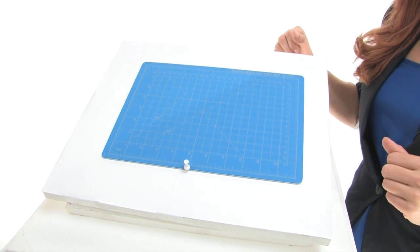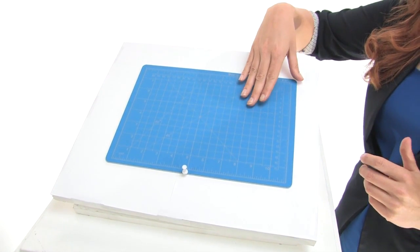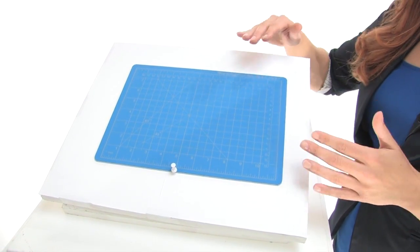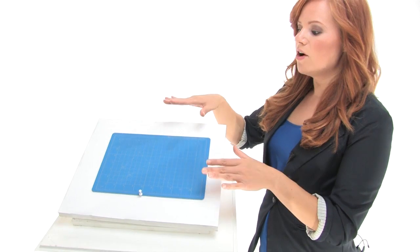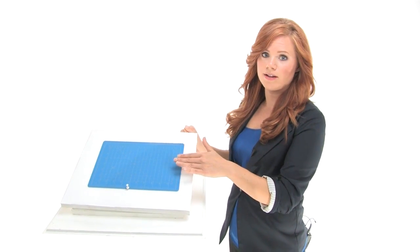They're available in blue, black and clear and they all have measurements as well as grid lines for precision cuts. They have a self-healing surface which means it'll last you a long time and they're all made out of five layers of PVC plastics which means the cuts will disappear.